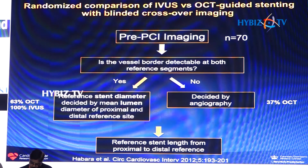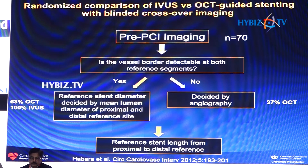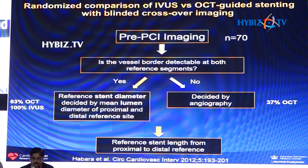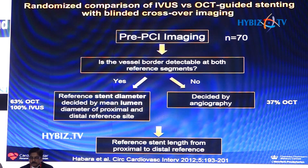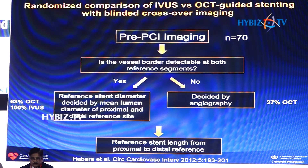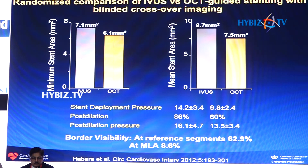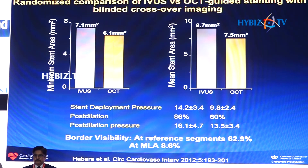What about choosing stent diameter? The first randomized controlled trial of IVUS versus OCT guided PCI was performed in only 70 patients in a crossover design. IVUS stenting was performed according to the vessel wall and OCT was performed according to the lumen. In the OCT arm the stent size was decided by angiography in 37 percent and only 63 percent by the lumen, but by IVUS it's decided by the wall 100 percent of the time. As a result of this change in sizing, IVUS leads to a significantly increased stent area compared to OCT, and stent deployment pressures and post-dilation pressures were also significantly higher.